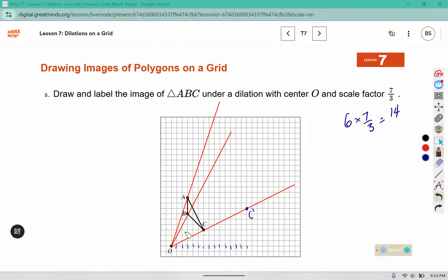Then we have B, we can think of it as going a vertical distance of 1, 2, 3, 4, 5, 6. So again, 6 times 7 thirds is also 14. So we would have 7, 8, 9, 10, 11, 12, 13, 14. And if we continue over, B prime should be around here.